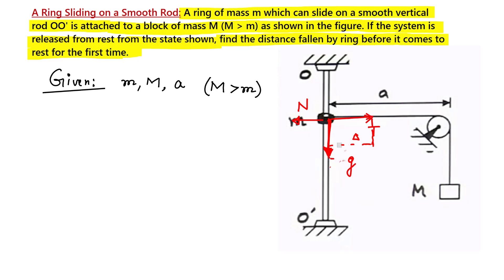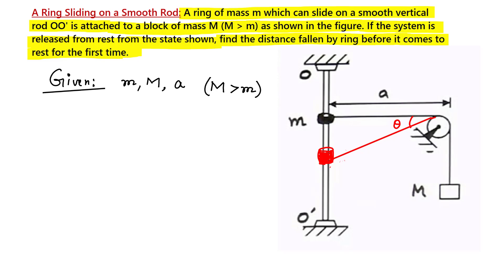Now let us say the ring has fallen through some distance and is now at an intermediate position making some angle theta with the horizontal. At this position, tension T is still acting and mg is also acting. The tension now has a vertical component T sin θ and a horizontal component T cos θ.